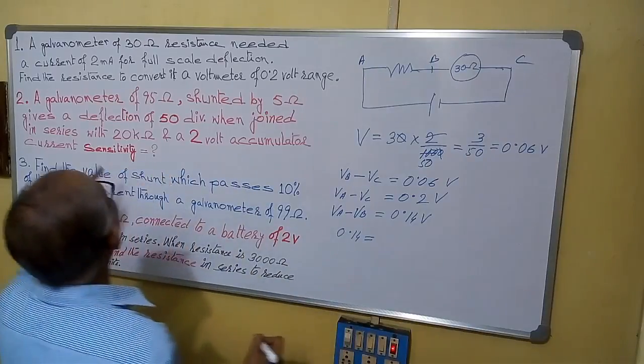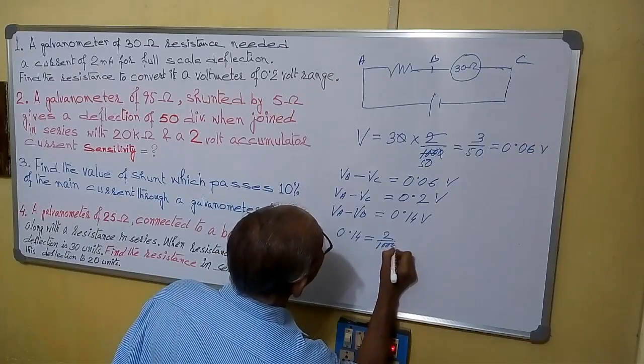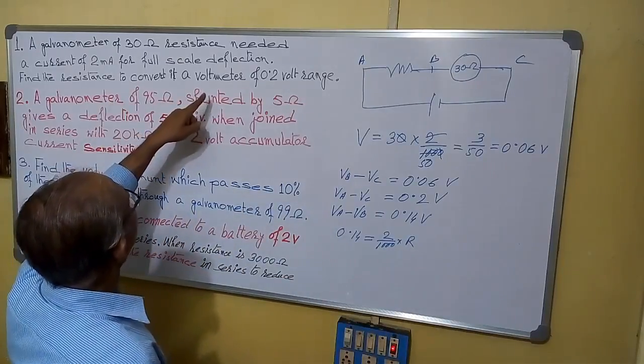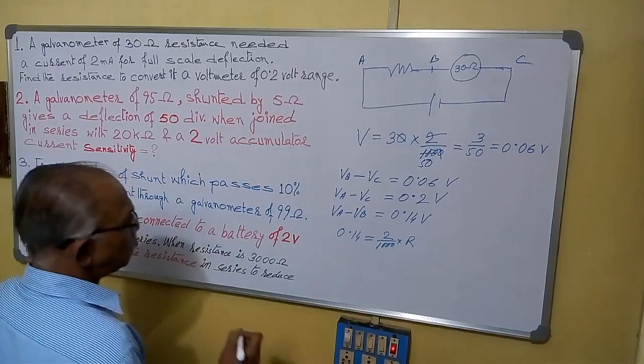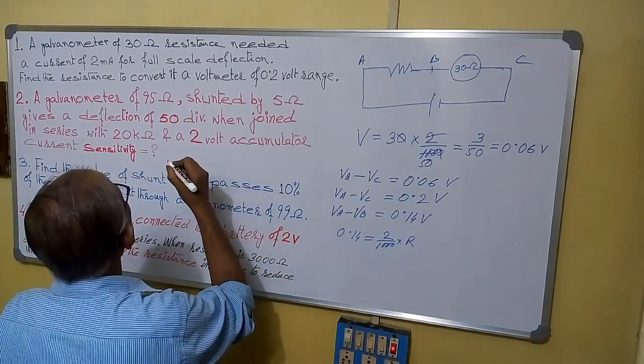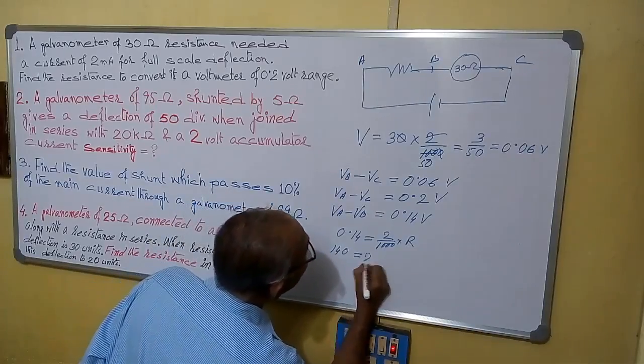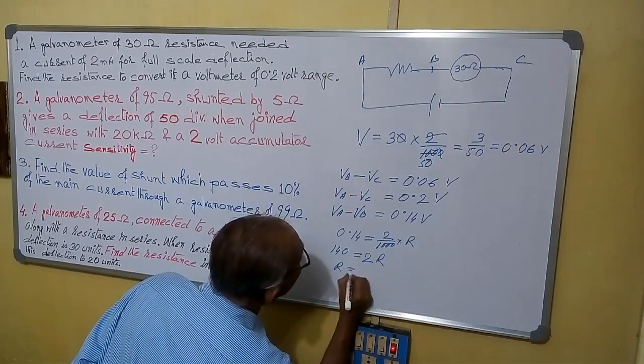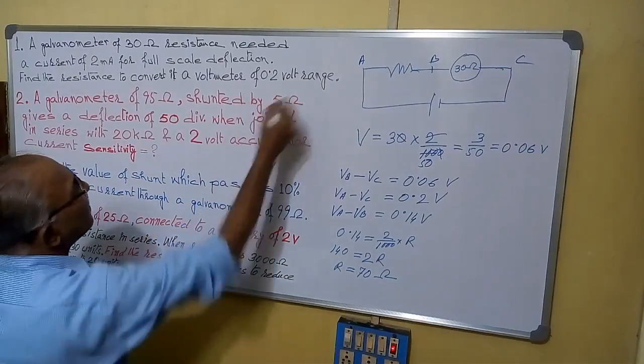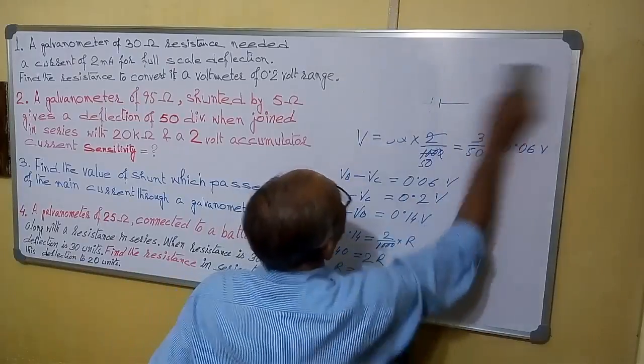What is the current? Current is 2 milliampere, so 2 by 1000 into R. This equals to 0.14 volt. So 140 equals to 2R, so R equals to 70 ohm. In this way we can calculate the resistance needed. So I think it is clear, so you can proceed to the next sum.